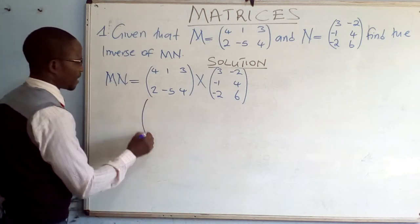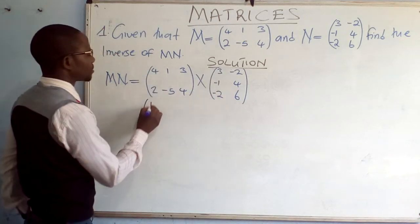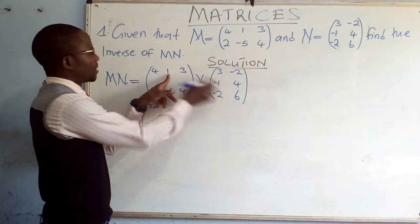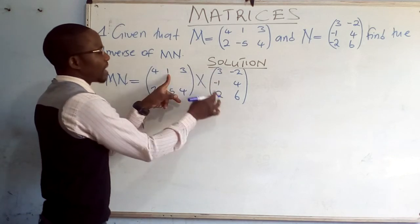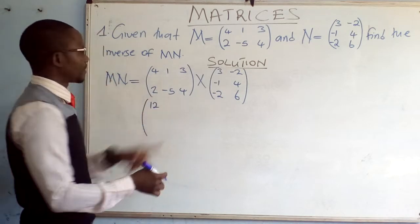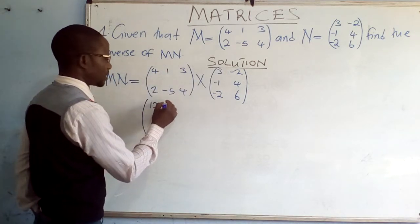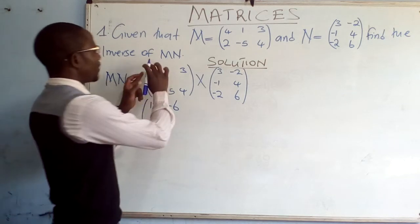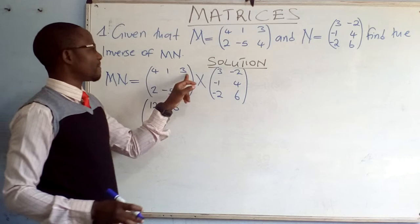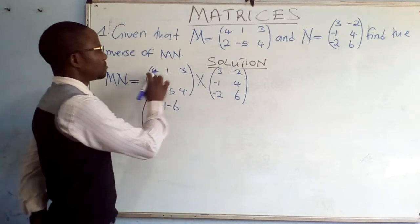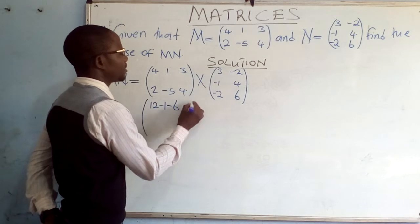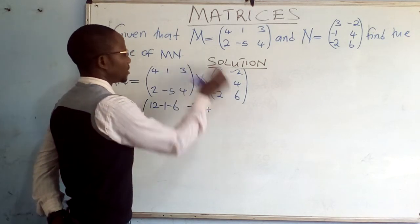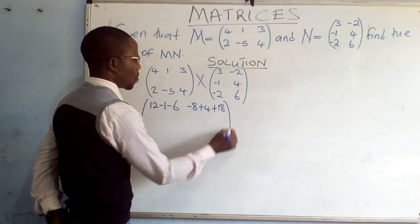To do that: 4 times 3 gives 12. The first and the first, the second and the second, the third and the third — row and column. 1 times negative 1 gives negative 1. 3 times negative 2 gives negative 6. We have multiplied this row and the first column. This same row must multiply the last column: 4 times negative 2 gives negative 8. 1 times 4 gives positive 4. 3 times 6 gives positive 18. So we close the matrix.